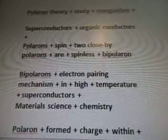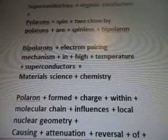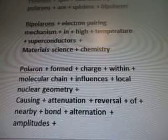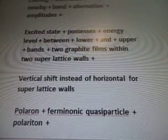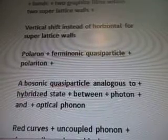Polarons spin, too close by — polarons are spinless bipolarons. Polarons: electron pairing mechanism in high temperature superconductors, materials science, chemistry. Polarons formed by charge within molecular chain. Influences local nuclear geometry, causing attenuation and reversal of nearby bond alternation amplitudes. Excited state possesses energy level between lower and upper bands. Two graphite films within two superlattice walls. Vertical shift instead of horizontal for superlattice walls.